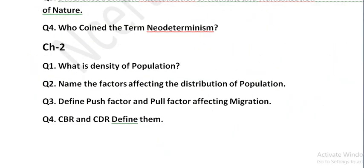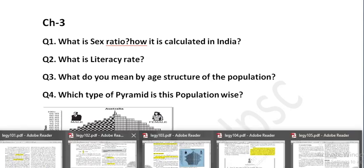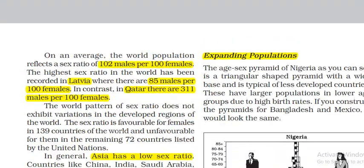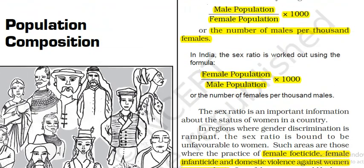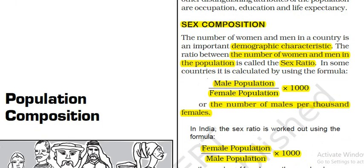Chapter 3: What is sex ratio and how is it calculated in India? Sex ratio, also called gender ratio, is the number of females available per the number of males. The ratio between the number of women and men in the population is called the sex ratio. The formula used in some countries is: male population upon female population into 1000 — i.e., number of males per thousand females.